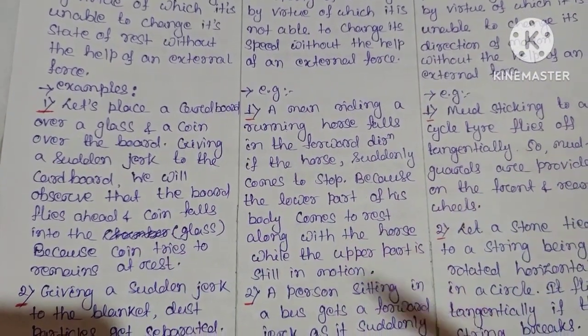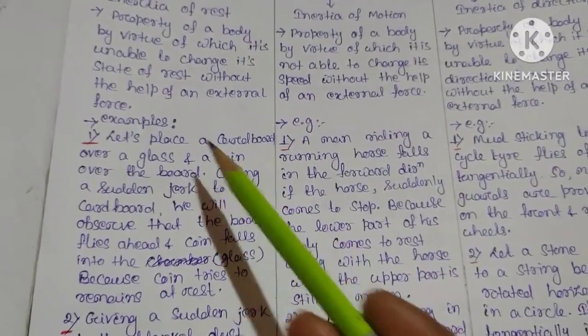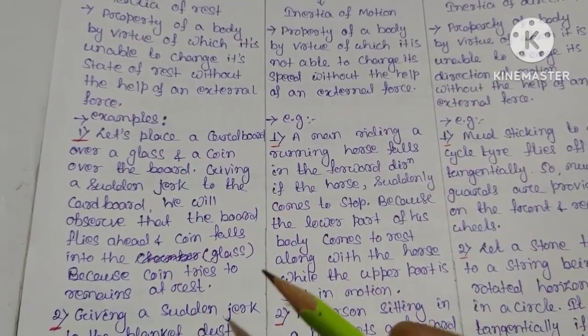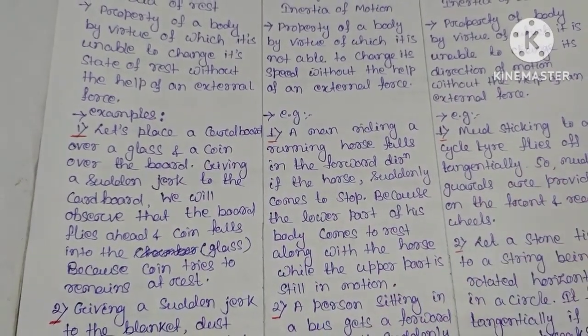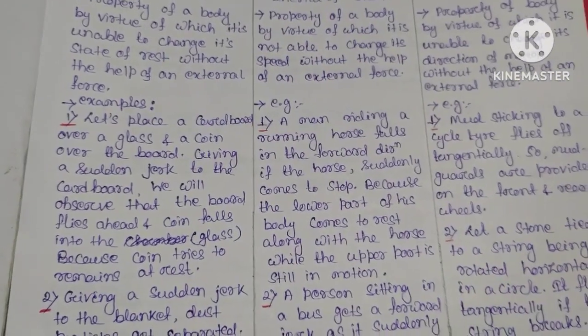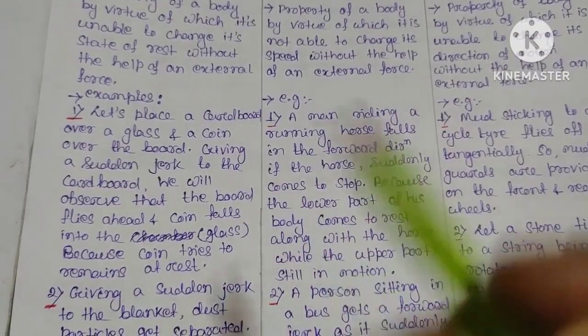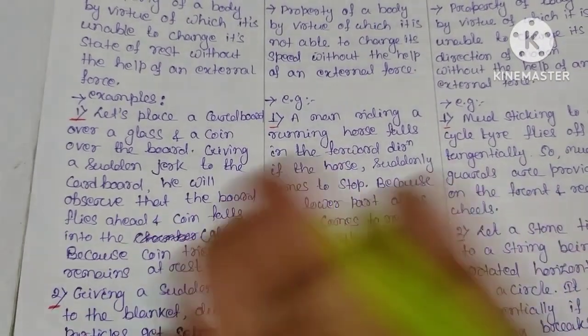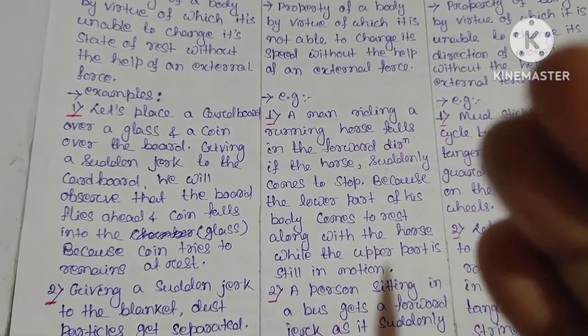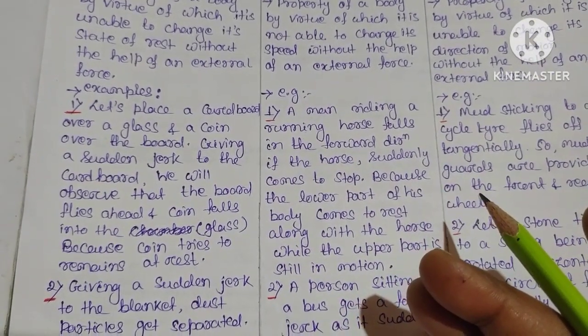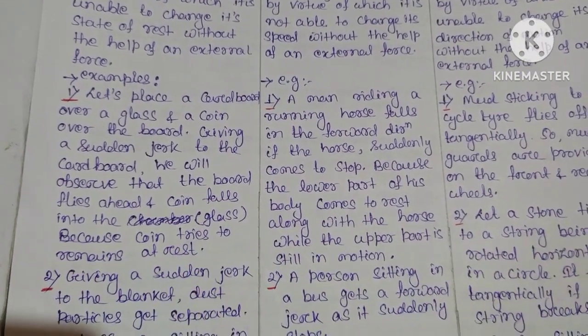First, examples of inertia of rest, inertia of motion, and inertia of direction. First example of inertia of rest: suppose we place a cardboard over a glass. When we give a sudden jerk to the cardboard, the coin falls into the glass because the coin tries to remain at rest.